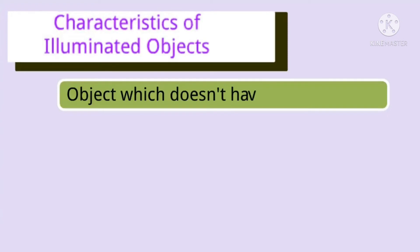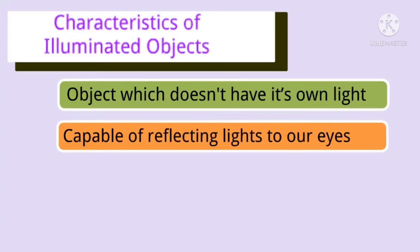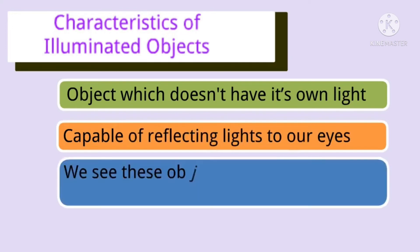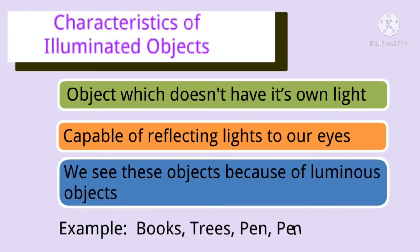And characteristics of illuminated objects: objects which do not have their own light, but are capable of reflecting light to our eyes. We see these objects because of luminous objects only. Examples: books, pen, trees, pencils, etc.